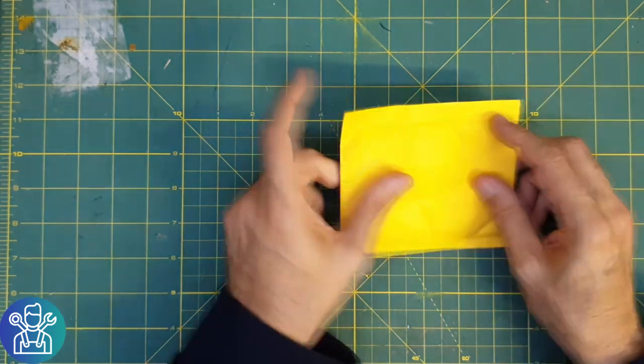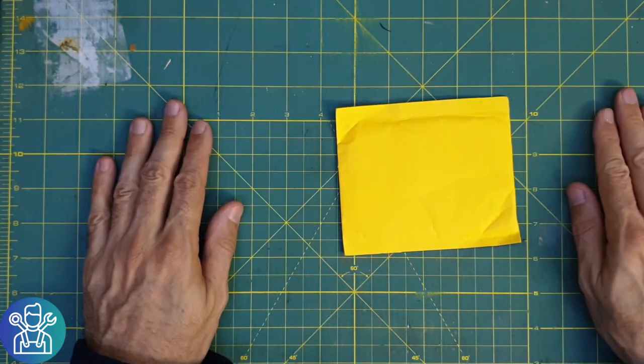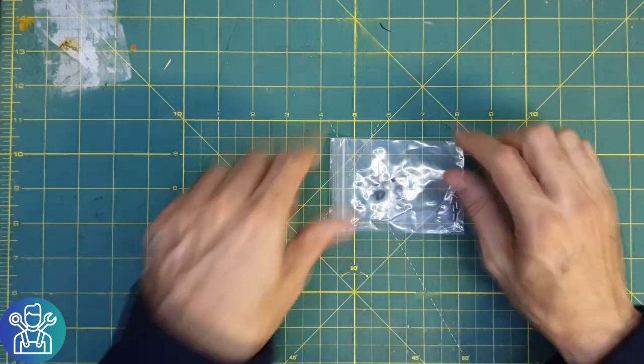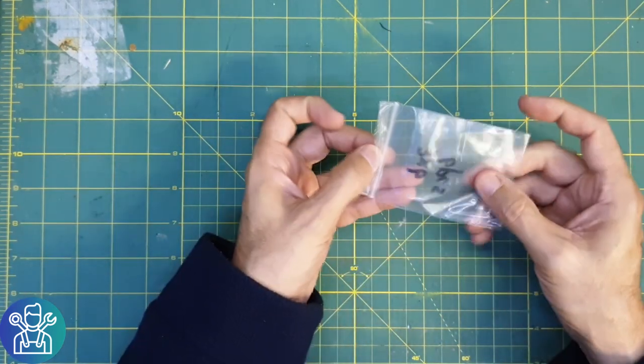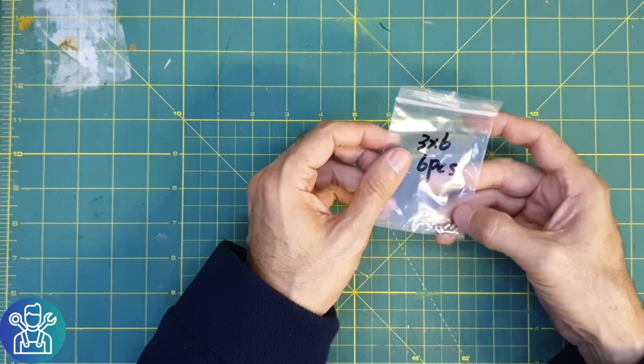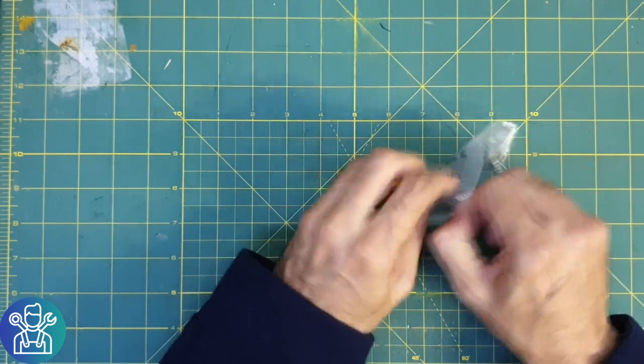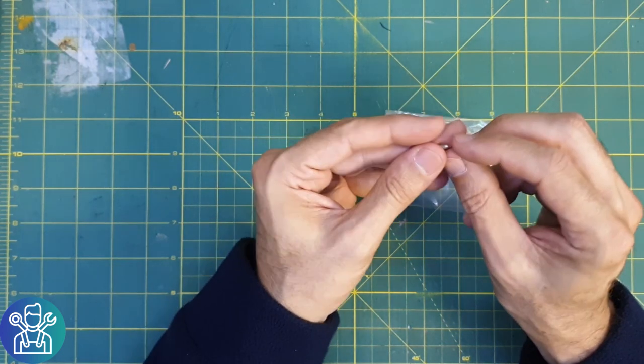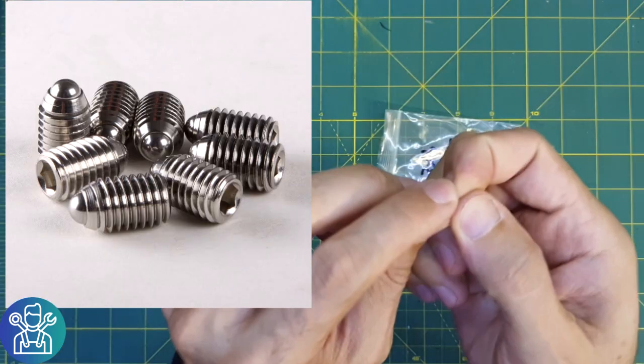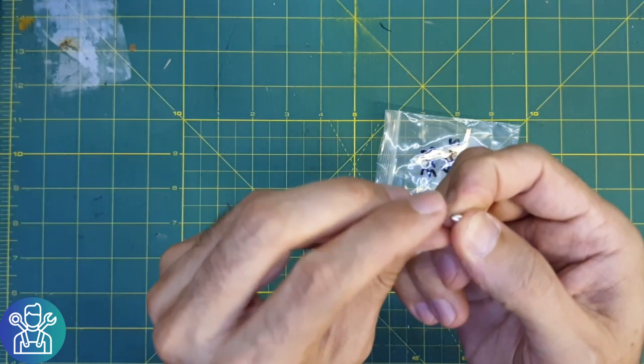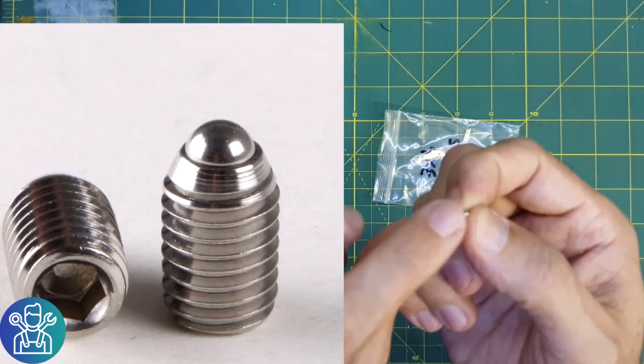And now the small package, these are very very tiny M3, six pieces. Those are the same as before. It's very hard to see. It has at the front a small ball bearing just like a ballpoint pen.